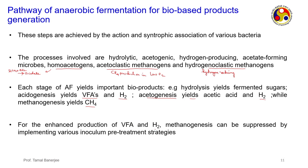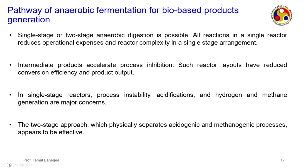Single-stage anaerobic digestion has all reactions in one reactor, which reduces operational expenses and reactor complexity. However, intermediate products cause process inhibition, reducing conversion efficiency. Process stability, acidification, and hydrogen and methane generation balance are major concerns. The two-stage approach physically separates the acidogenic and methanogenic processes, which appears more effective than single-stage.